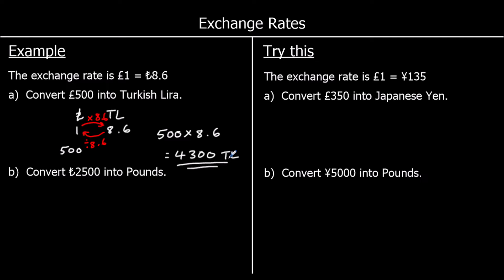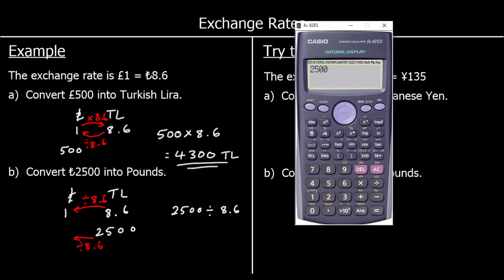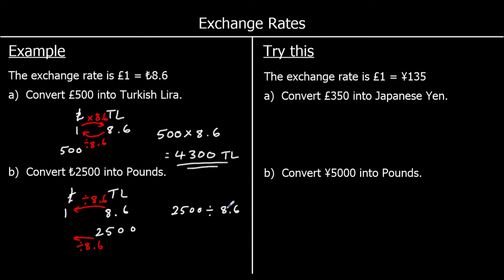Part B: convert 2,500 lira into pounds. Same exchange rate. We're going from lira to pounds, so we divide by 8.6. Our calculation is 2,500 divided by 8.6, and we're going to give our answer to two decimal places because we're dealing with money. I've got 290.697..., so to two decimal places that's 290.70 pounds.